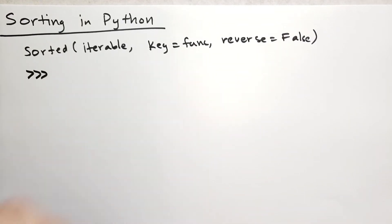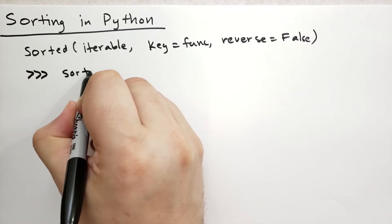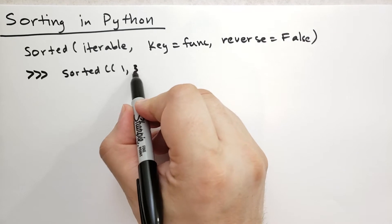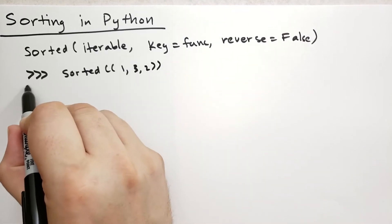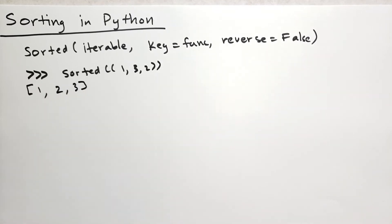If I were to bring up a Python interactive session and type something like sorted with a tuple, let's say 1, 3, 2, then it would give me back a list with the elements 1, 2, and 3 in sorted order.